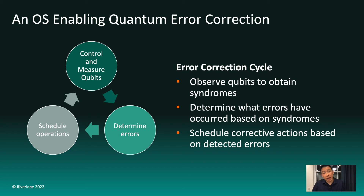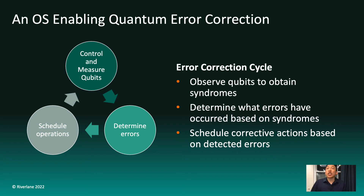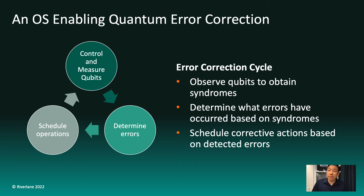So if we want to build an OS that handles the complexity of quantum error correction, what would it need to do? The most important thing is that it would need to do this repeated cycle of measuring qubits to extract syndromes — the technical term for the clues we're able to observe. Every logical qubit will be made up of hundreds of physical qubits, so the number of measurements needed per cycle really starts to add up. Next, we have to determine what errors have happened — a hard problem that needs to be done really, really quickly. Finally, we have to plan out how to correct the error, either by fixing it immediately or adjusting subsequent operations to take this error into account.